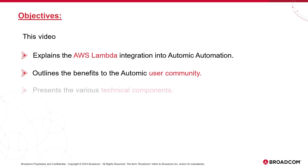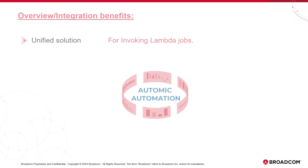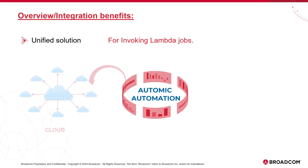We'll provide some technical insights so that the integration components are clearly identified and the deployment sequence is understood. We'll focus on the configuration of the agent and the design of the two core object templates — connections and jobs. Finally, we'll run through a demo. Atomic Automation plays a central role in orchestrating operations across multiple environments, including the cloud.